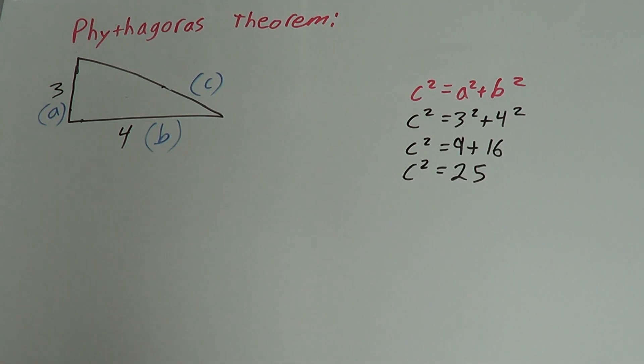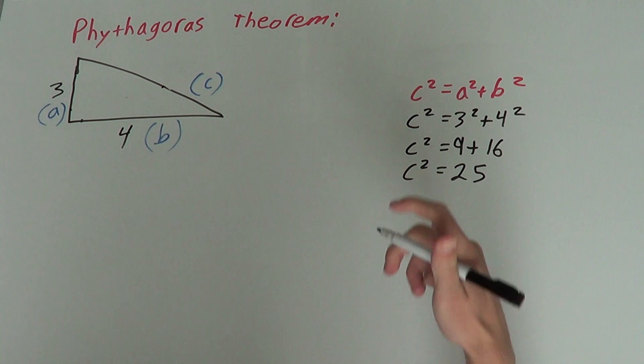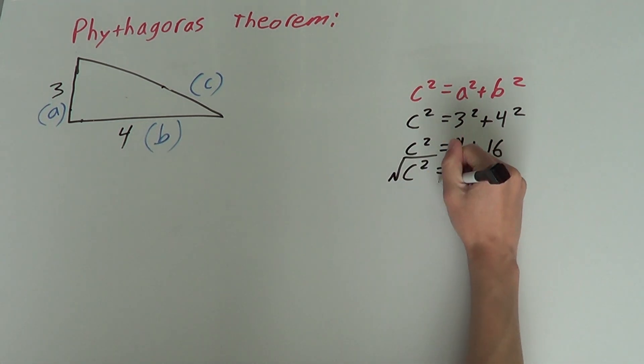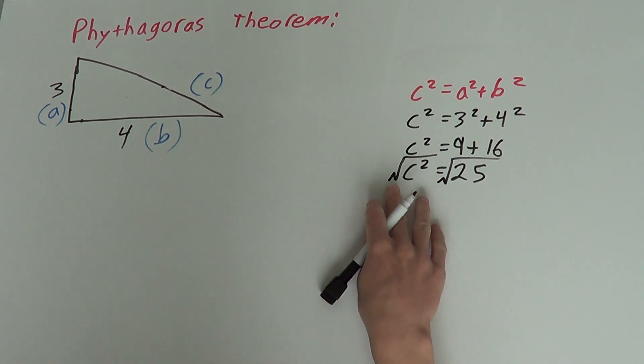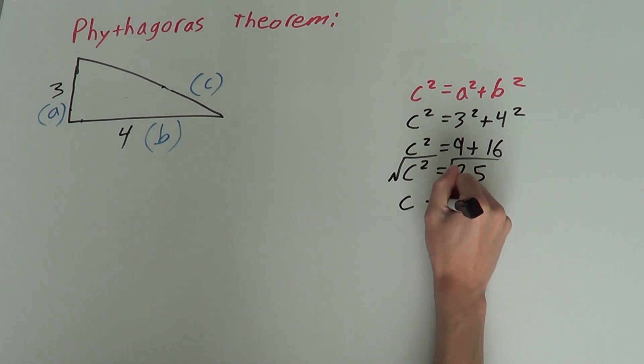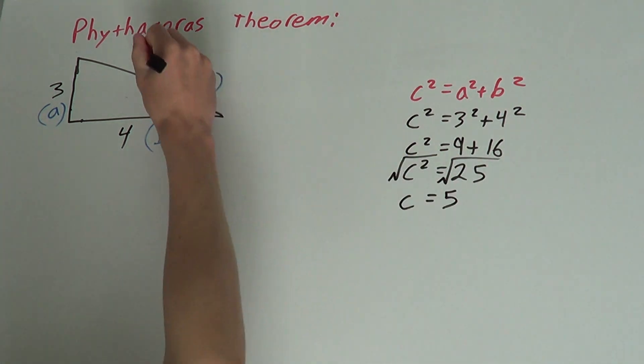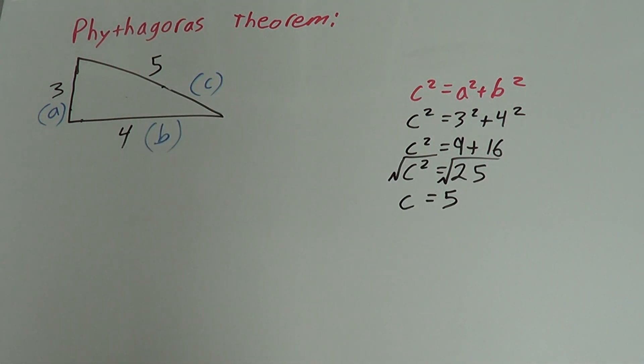But we're not quite done. We have c squared equals twenty-five, but we're looking for c. To get c by itself, we take the square root of both sides. The square root and the squared will cancel each other out to give us c. So, c equals root twenty-five, which is five. That is a basic example of Pythagoras theorem.